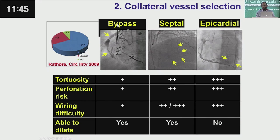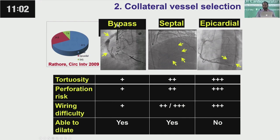One needs to select the collateral and reach it. Amongst the collaterals, there are the septal collaterals, the epicardial collaterals, and the bypass grafts. Bypass grafts are the safest in many patients because they are often easy to reach. Septal collaterals are also good because they are safe, but you have to be careful not to cause a problem — a rupture of these septal collaterals can cause a hematoma, and often you may have to close from both ends. Epicardial collaterals are not the first default and are used as a second option, unless you are well trained and have done quite a few retrograde approaches.